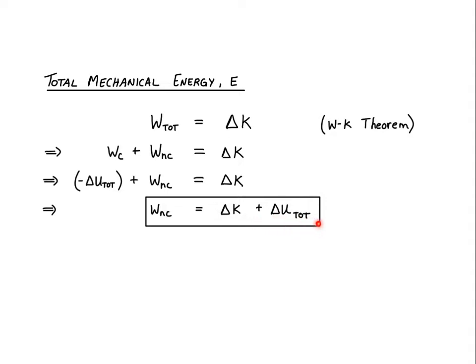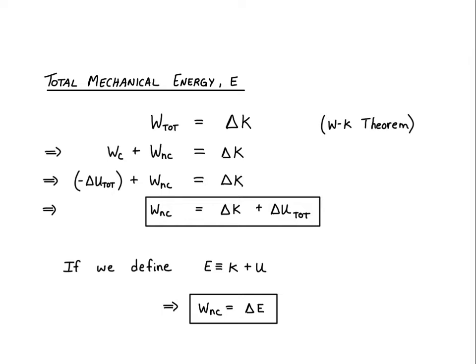We define the total energy of a system, E, as the sum of the kinetic plus potential energy of the system. With this definition, the formula simplifies to: non-conservative work equals the change in the total energy of the system.